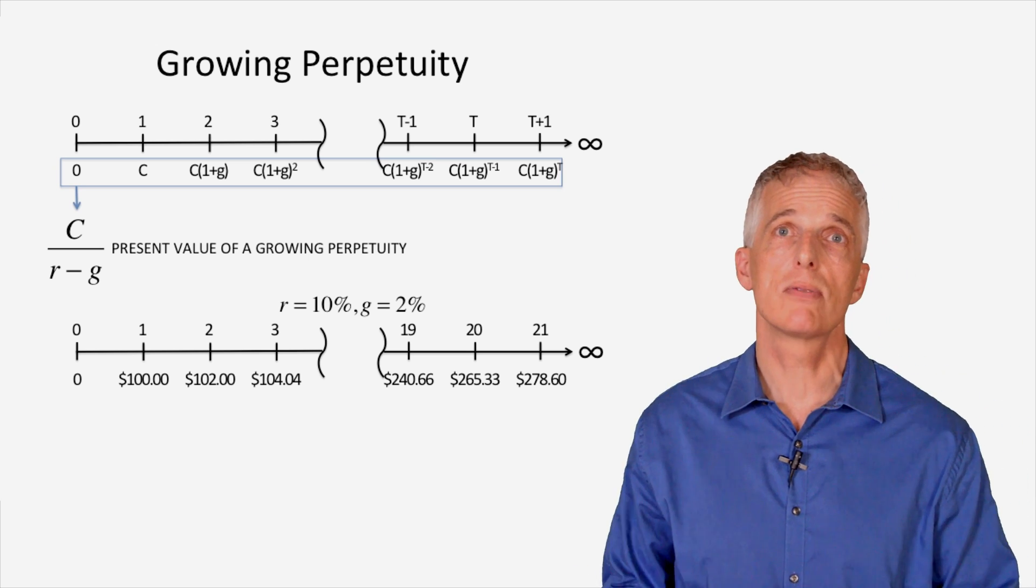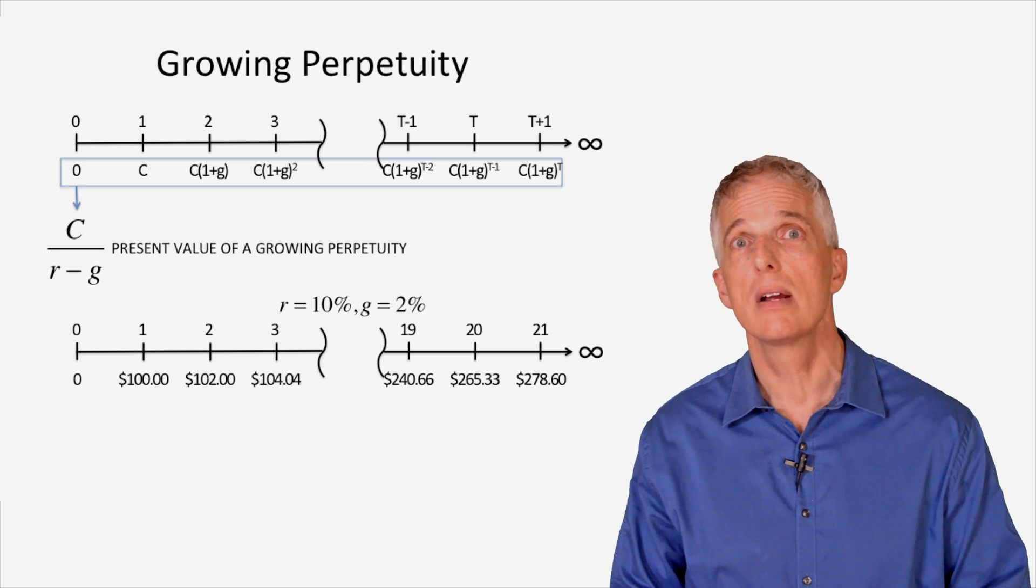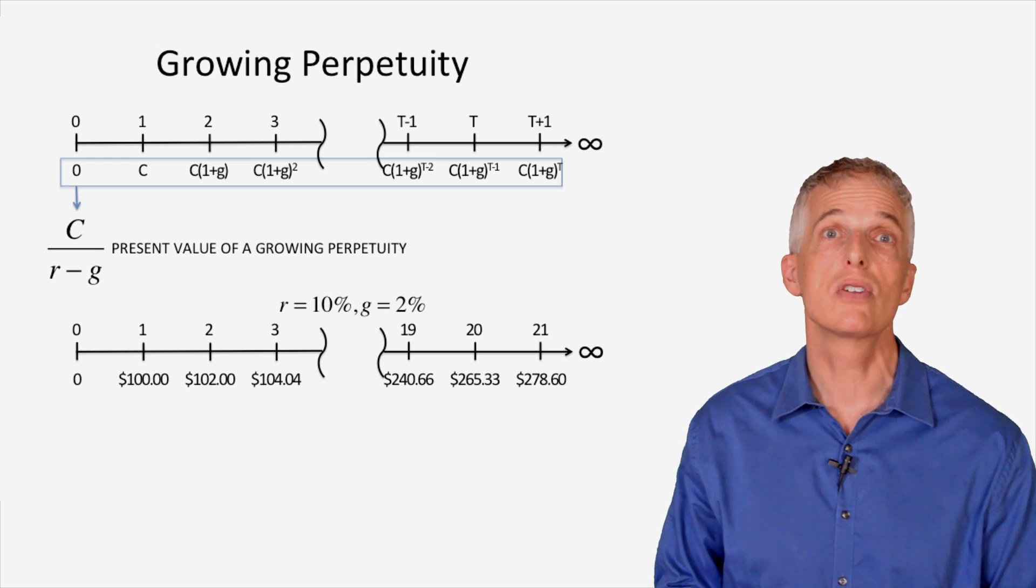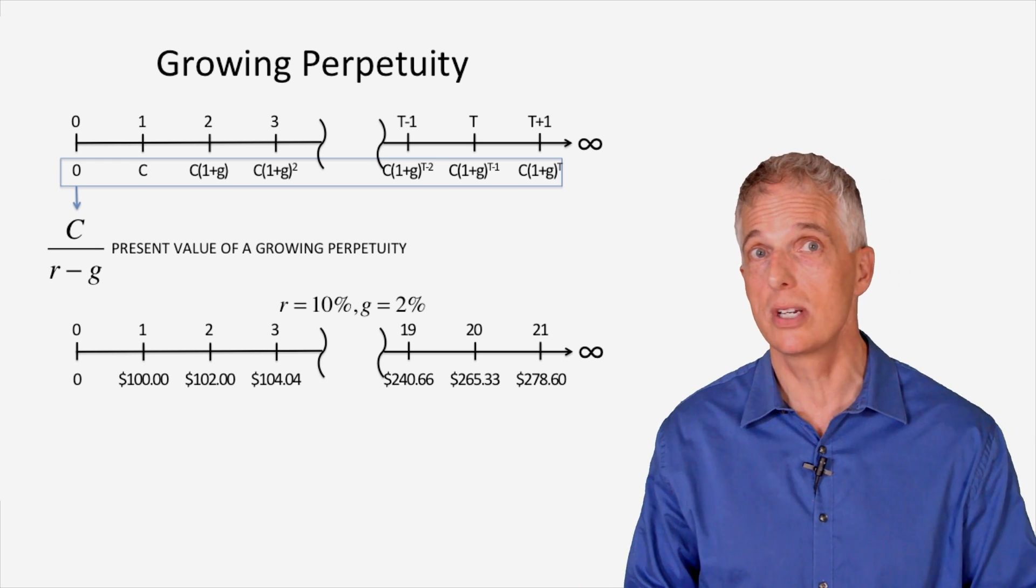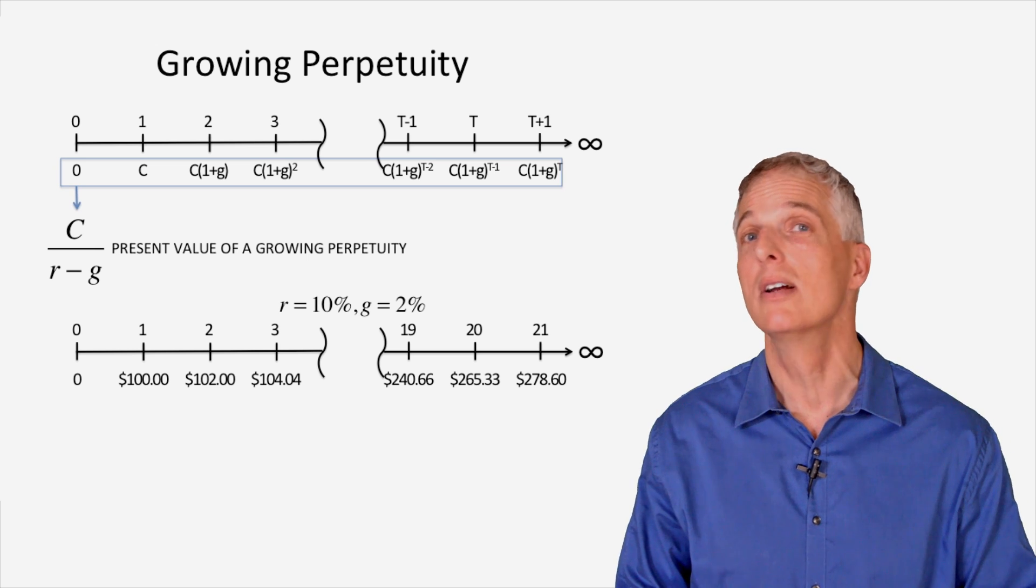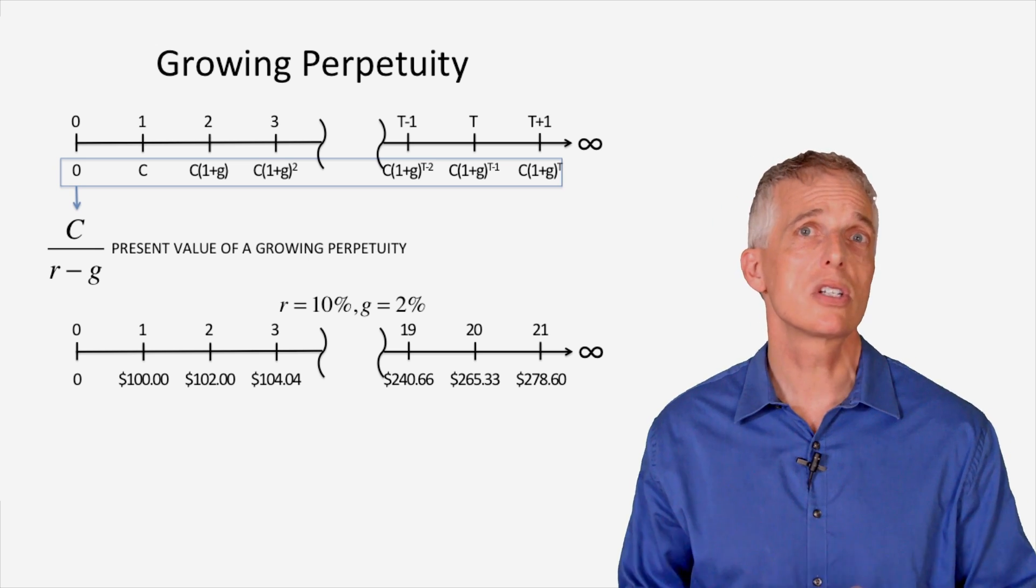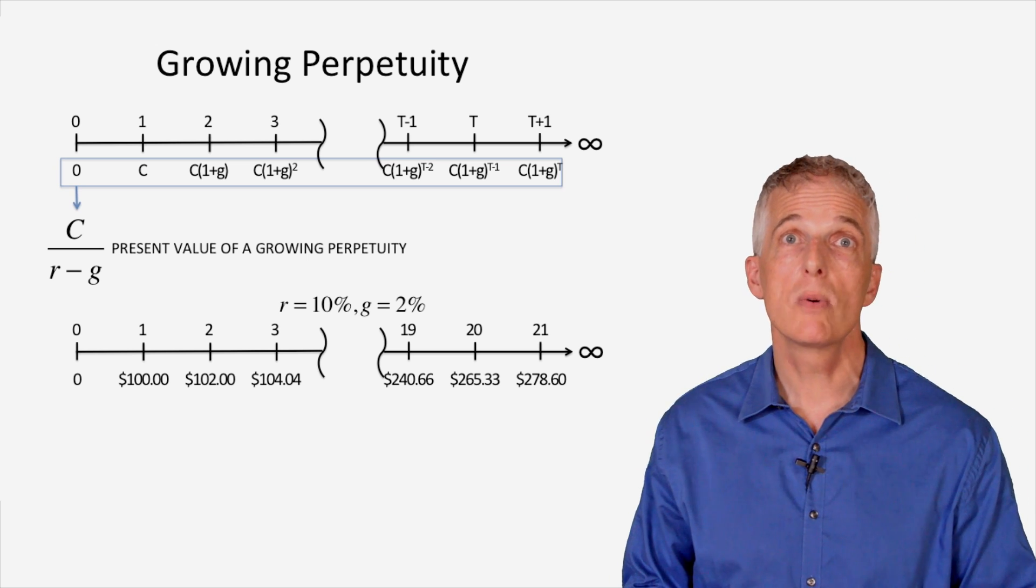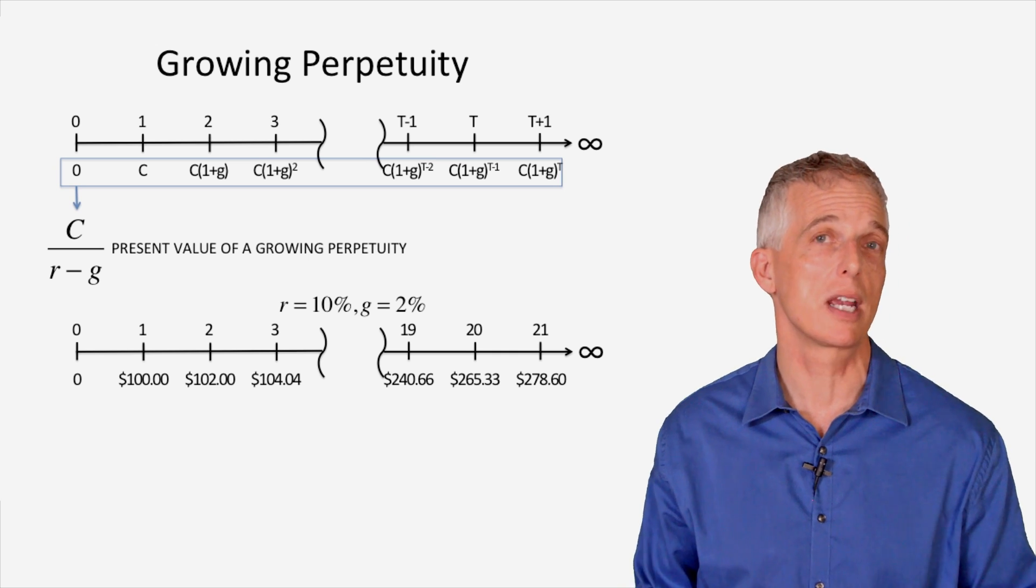For example, if the cash payment of $100 from our prior example grew at 2% growth rate, we would receive $100 in the first year, $102 in the second year as the cash flow has grown by 2%, and $104.04 in the third year. This is a small effect in early years, but after 19, 20 or 21 years, the effect of compound growth on the promised cash payment starts to make a difference.